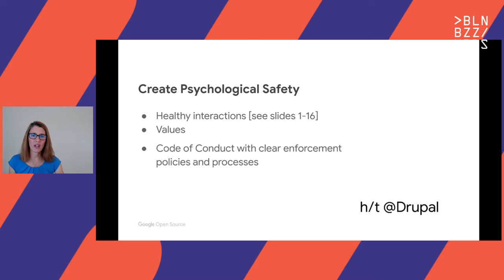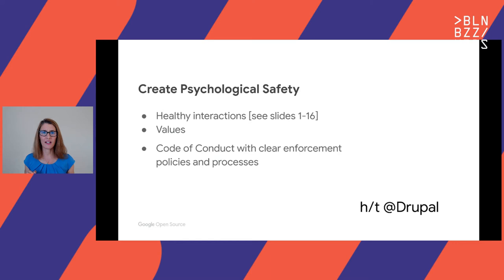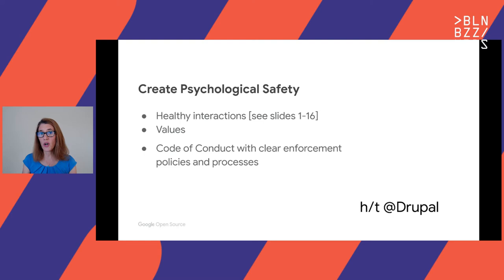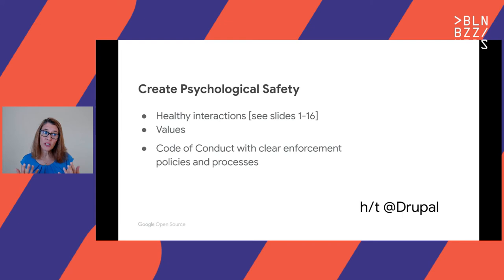You need a code of conduct. Most projects have one, but what I strongly encourage is that you don't just have a code of conduct — immediately launch an enforcement policy so people know what happens if there's inappropriate behavior, what process will be used, so no one is flat-footed when something goes wrong. And it's important to train the people who are going to enforce your code of conduct so they are properly supported and know how to navigate this. It takes a lot of core skills to manage a community, so you need to really invest here.